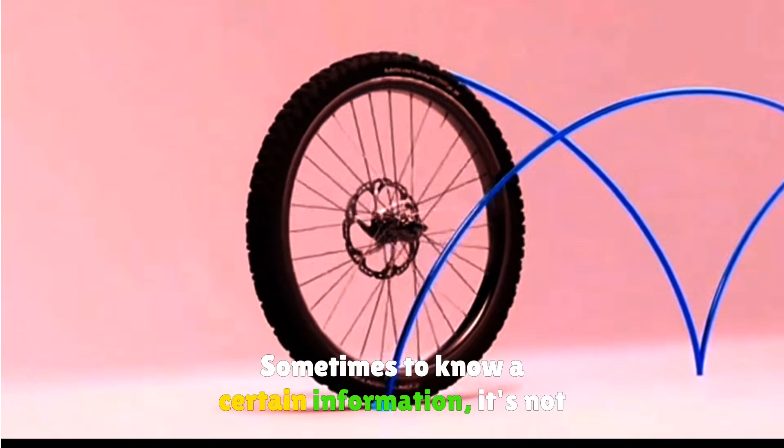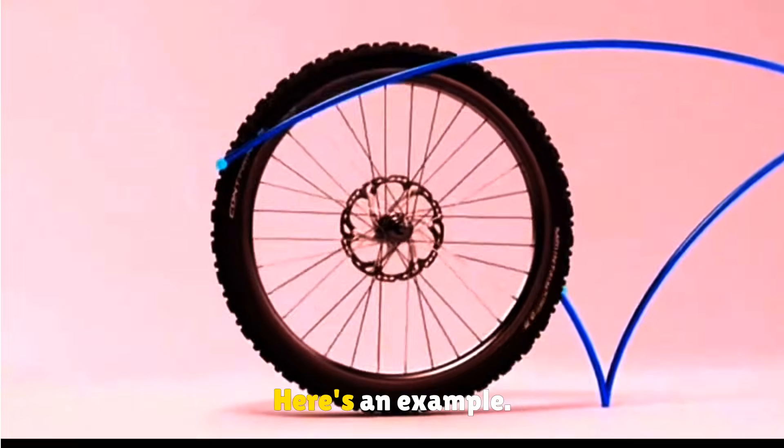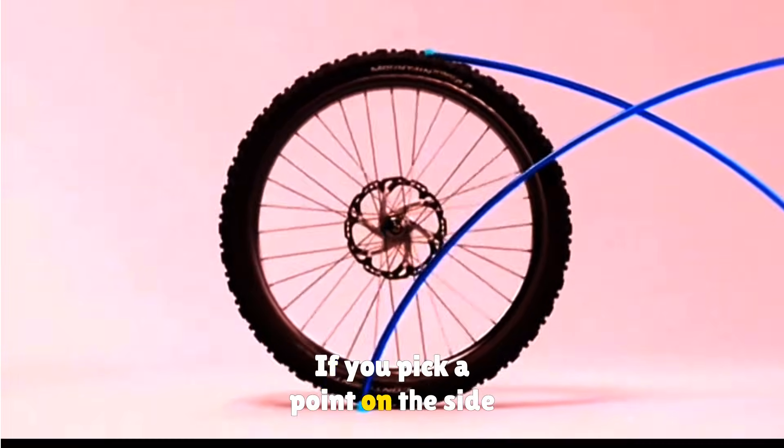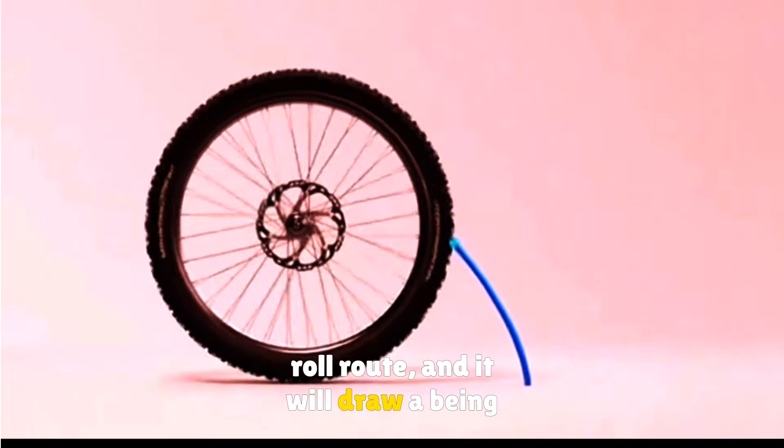Sometimes knowing certain information isn't able to answer a problem. Here's an example: if you pick a point on the side of a wheel, as the wheel rolls, it will draw a being called a cycloid.